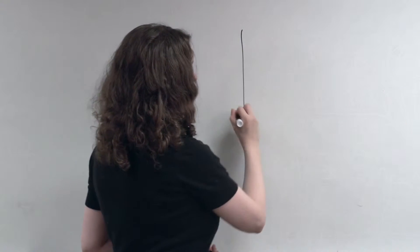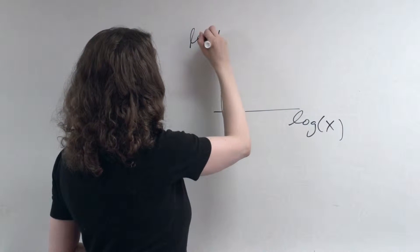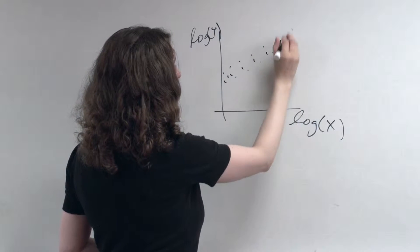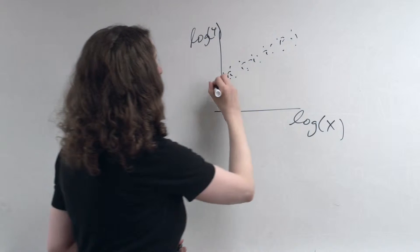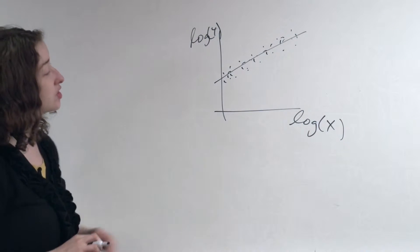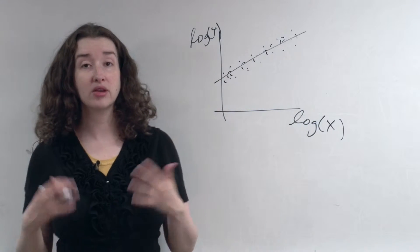What about a scenario where, in order to make the assumptions of a simple linear regression as true as possible, we've logged both x and y? So if our scales are the log of x and the log of y, only then are linearity and homoscedasticity assumptions met, and we fit some line. If we're comfortable interpreting x on the log scale and interpreting y on the log scale, we could just stop here.